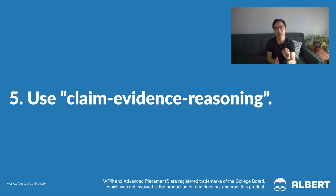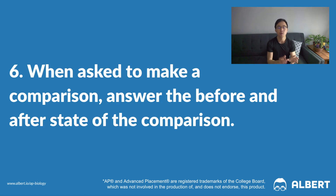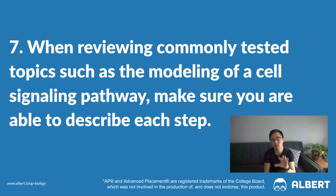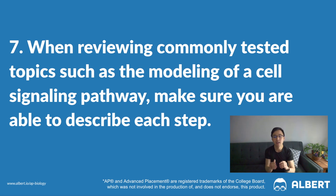The next set of tips is aimed at improving the way that you're responding in your AP Biology graphing and modeling questions. Tip number six: when you are asked to make a comparison, you are answering both the before as well as the after state of comparison. Tip number seven: when reviewing commonly tested topics such as the modeling of a cell signaling pathway, you have to actually describe each step of the pathway and anticipate what might happen if a particular step is activated or inhibited. Tip number eight: practice reading multiple types of data and creating tables from different sources of data. Students often miss points for forgetting to include units on their axes or missing labels such as titles in their charts.